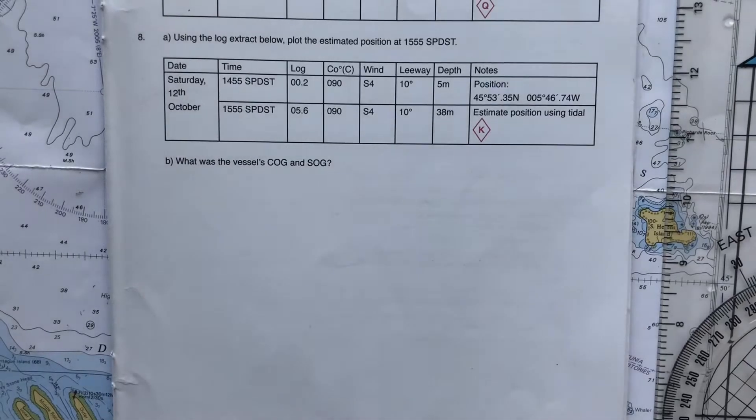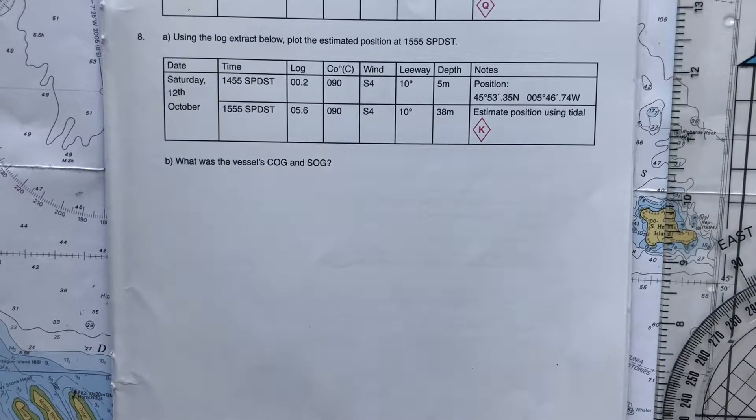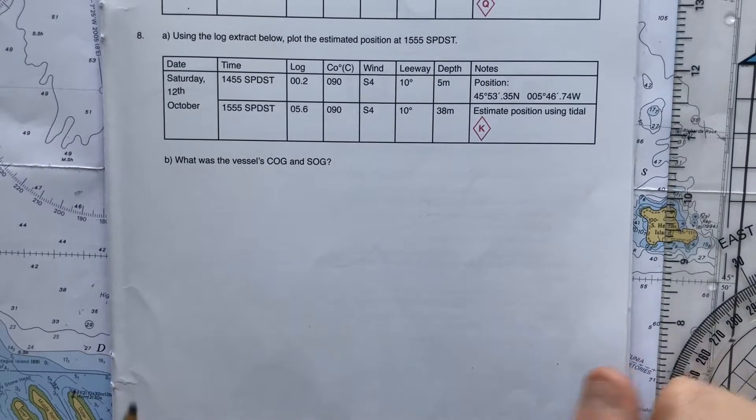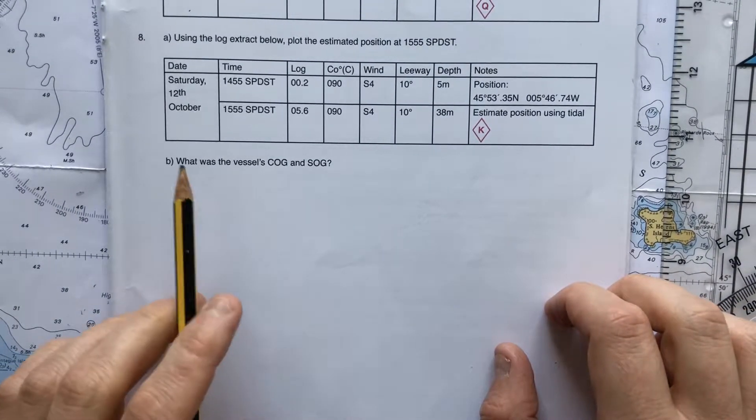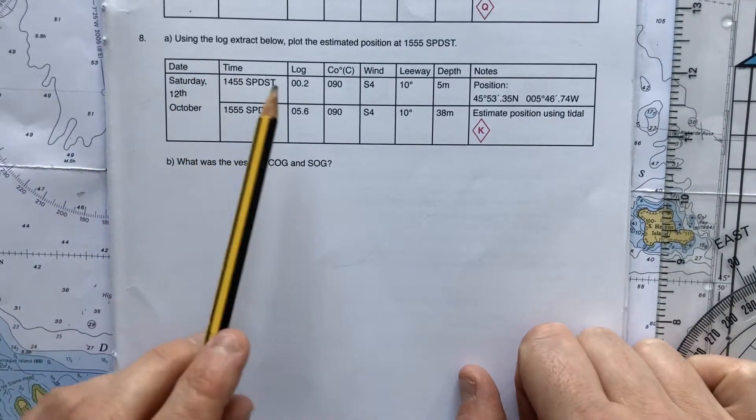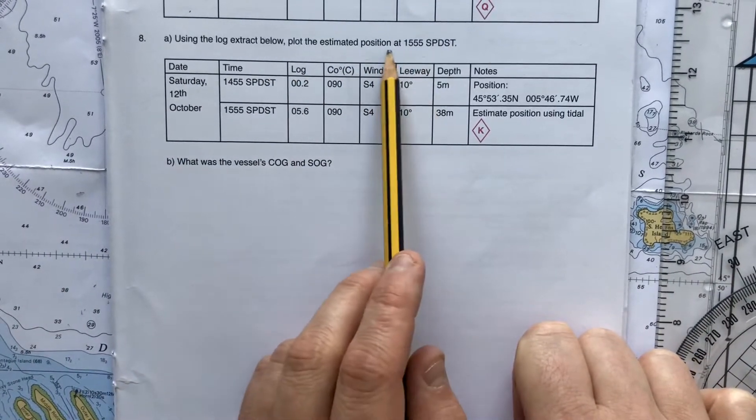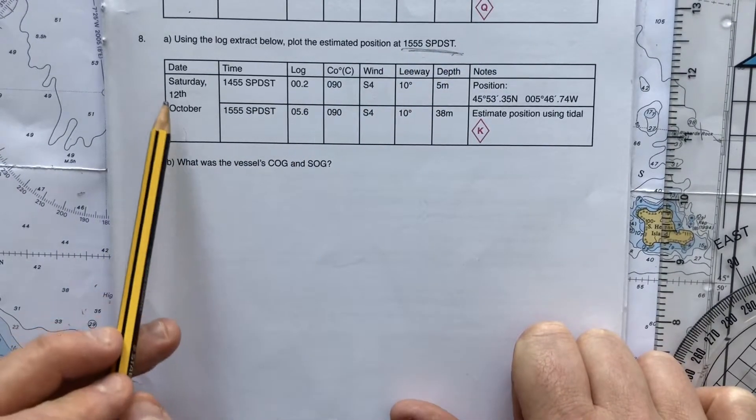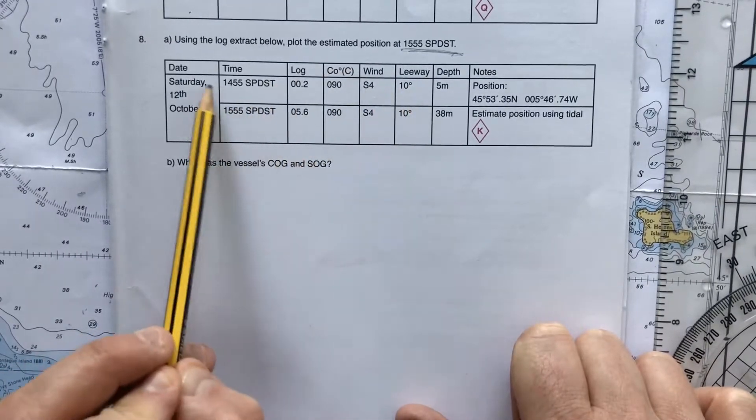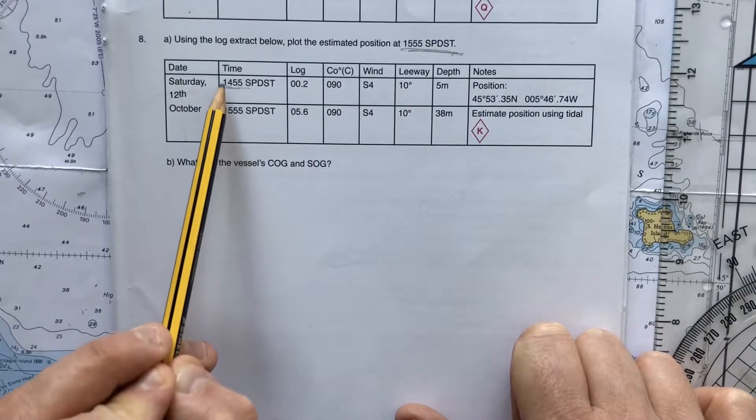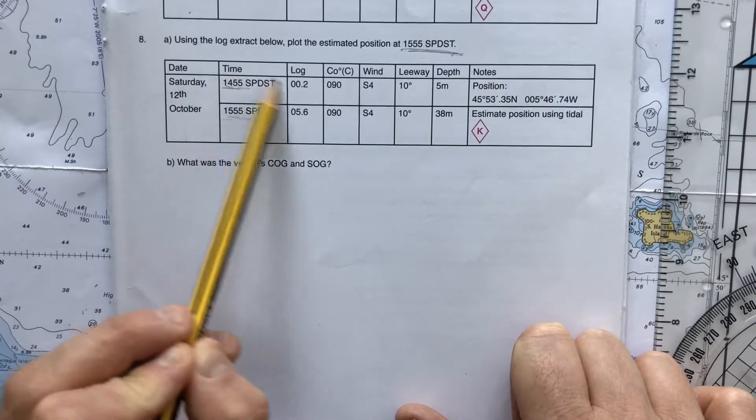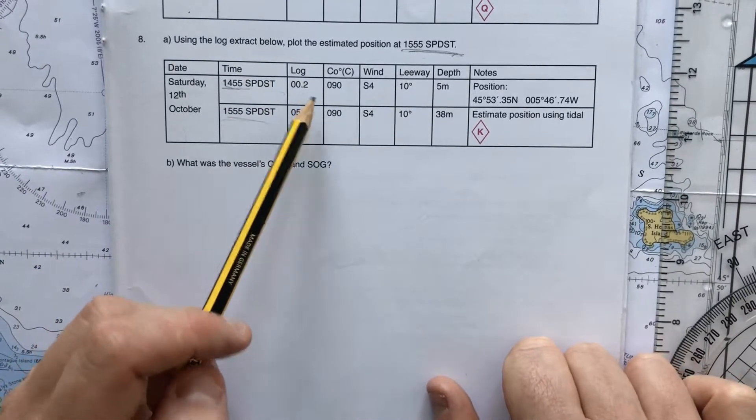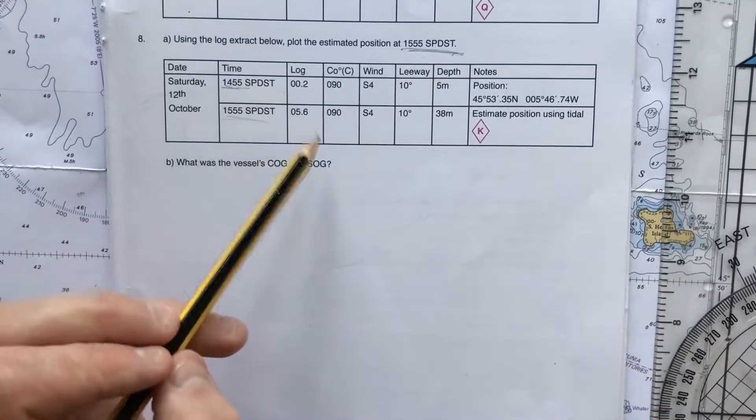Okay, hi there all. So we're now going to do another estimated position example. This time we're doing question 8 from the Yachtmaster selection. So question 8 is using the log extract below, plot the estimated position at 1555 SPDST. It's the 12th of October. We're starting at 1455 SPDST and finishing at 1555, so it's a whole hour's plot. That's fun - we don't need to be worrying about halving tidal streams or anything like that.